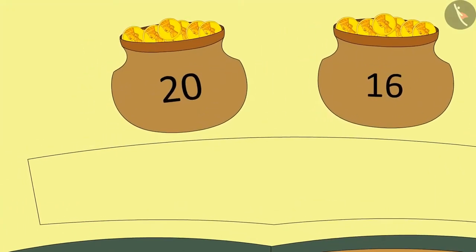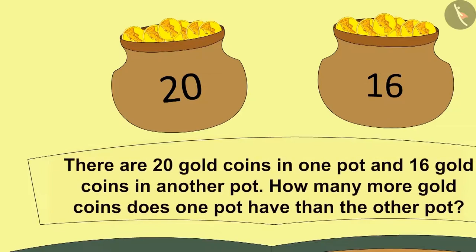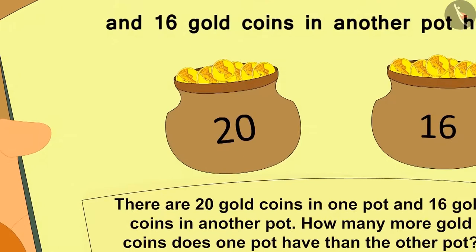Children, can you make another question as well on this? Yes, absolutely right. Here, there are 20 gold coins in one pot and in another pot, 16 gold coins. How many more coins are there in one pot from another? Likewise, we can also make a subtraction puzzle as well.